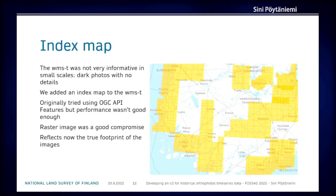When we zoom in closer, we switch to vector data. With vector data, we can deliver more attributes and make it possible for the browser client to do filtering and queries of what these images are about.